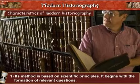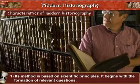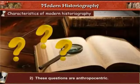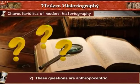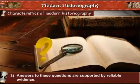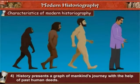In this chapter, we are talking about the characteristics of modern historiography. First, its method is based on scientific principles and begins with the formation of relevant questions. Second, these questions are anthropocentric, meaning interpreting the world in terms of human values and experiences. Third, answers to these questions are supported by reliable evidence. Fourth, history presents a graph of mankind's journey with the help of past human deeds.